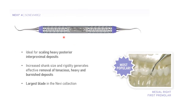Navy 4 is used for scaling heavy posterior interproximal deposits, mostly in molars and premolars. Its increased shank size and rigidity generate effective removal of tenacious, heavy, and burnished deposits. It has the largest blade in the Navy collection, which is its major advantage.